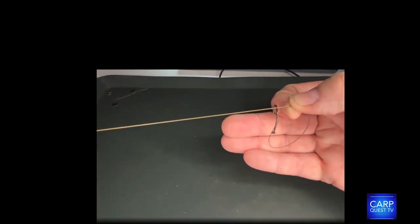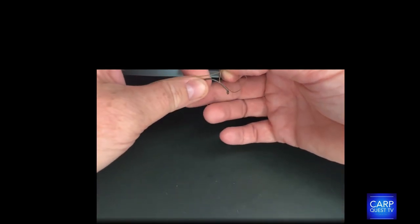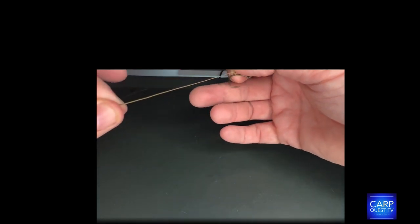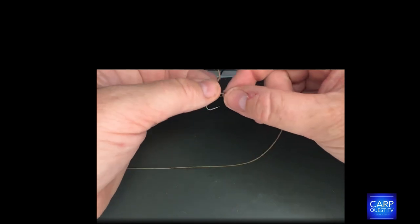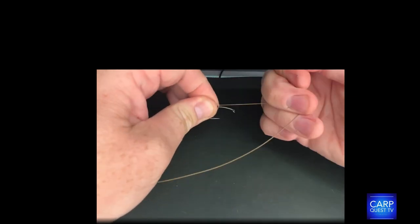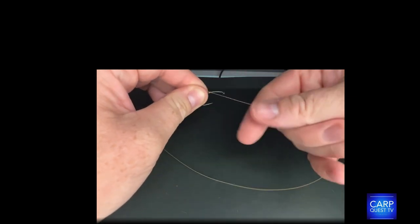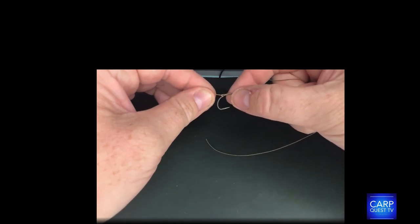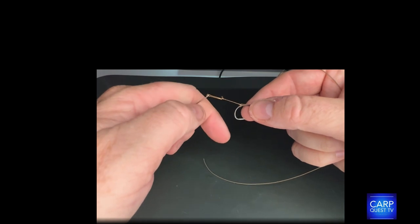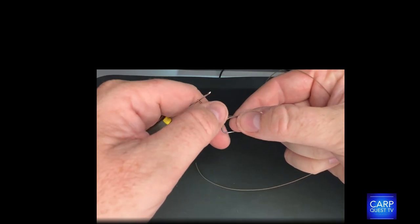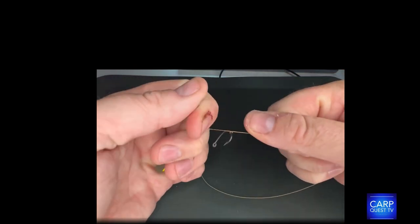Then what we're going to do is tie a second knot just to lock it into place. Just making sure everything's still aligned and absolutely spot on. Give it a last pull just to tighten and bed everything down. I'm just going to use a baiting needle just to help me bed down the knot.